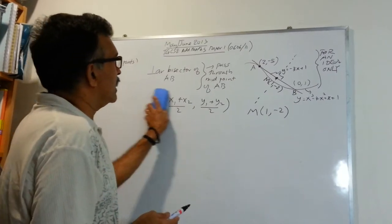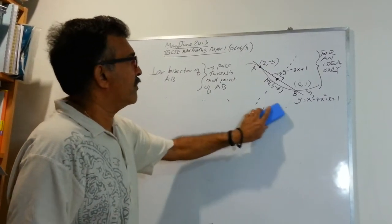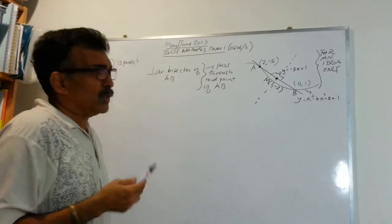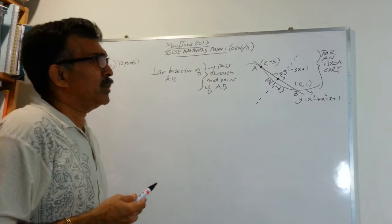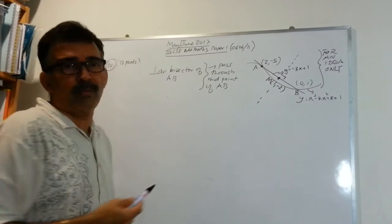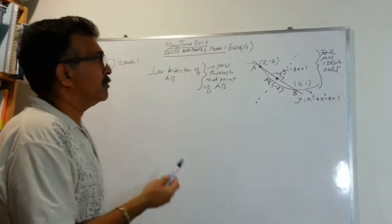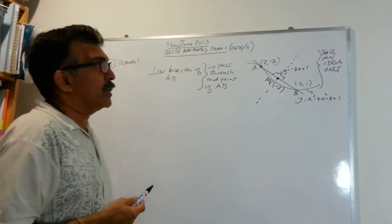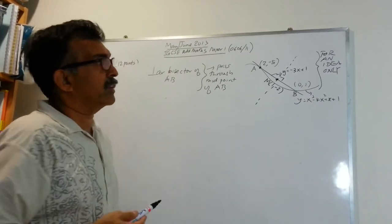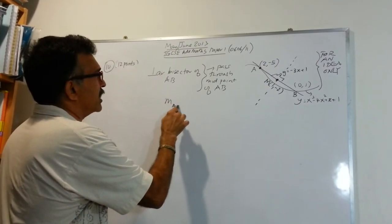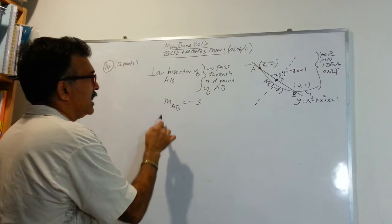Then, we need the gradient of AB. Now, the gradient of AB, we know the gradient. So, I don't think you want to spend your time in... You can if you want. Go ahead and use y2 minus y1 over x2 minus x1. But, you already know the gradient of AB because you know the equation of AB is y equals negative 3x plus 1. So, the gradient of AB is negative 3. Therefore,